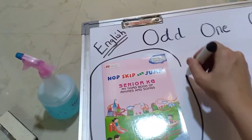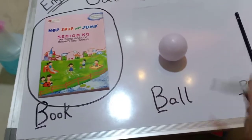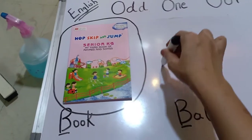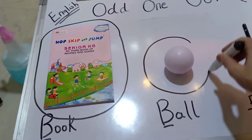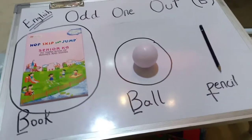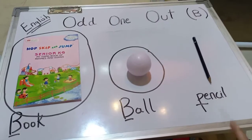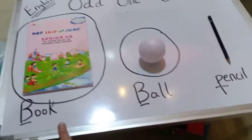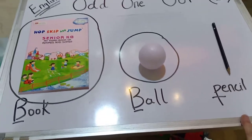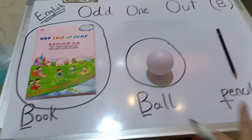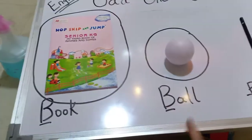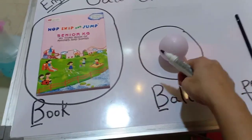We have book — b-b-b-book — and then we have ball — b-b-ball. So we are finding the odd one out. The odd one out is pencil, because book and ball are the same — they both start with B — but pencil is different. b-b-book, b-b-ball, but pencil starts with P.